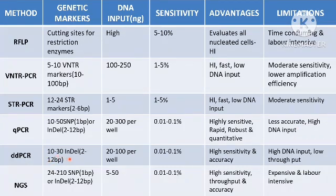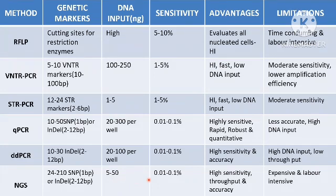ddPCR uses 10 to 30 indels, requires 20 to 100 nanograms of DNA per well, and has sensitivity similar to qPCR. It is a low-throughput technique and requires a high amount of DNA. NGS uses 24 to 210 SNPs of 1 base pair size or indels of 2 to 12 base pairs as genetic markers. Input DNA required is 5 to 50 nanograms, and sensitivity is similar to qPCR and ddPCR. NGS is highly sensitive, high throughput, and highly accurate, but it is expensive and labor intensive.